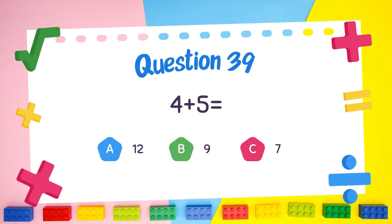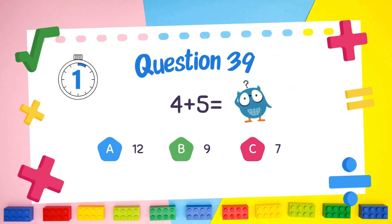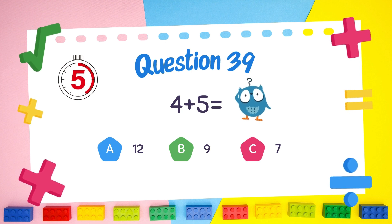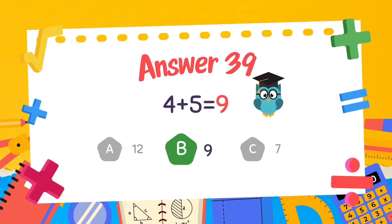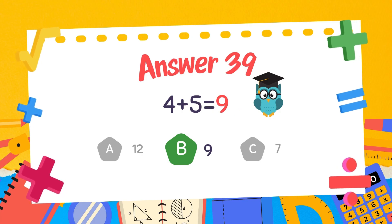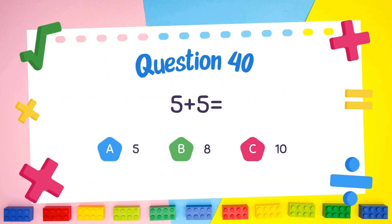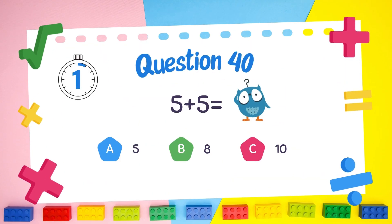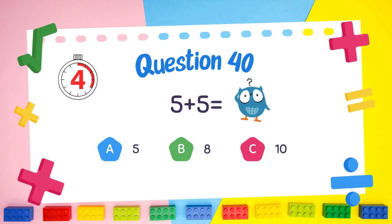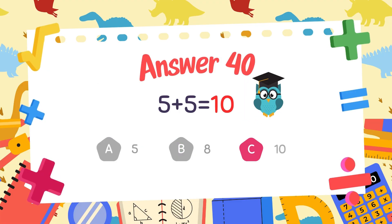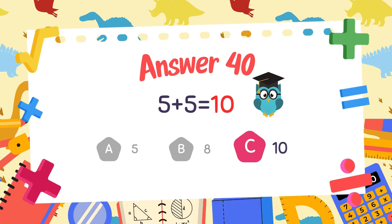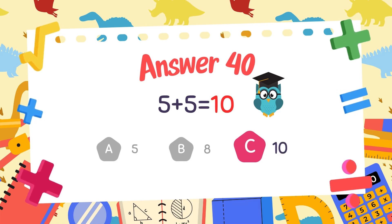What is 4 plus 5? The answer is 9. What is 5 plus 5? The answer is 10. Yay!